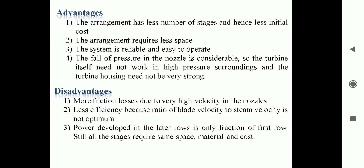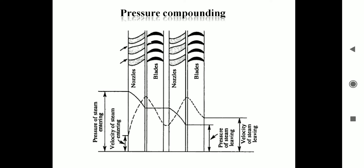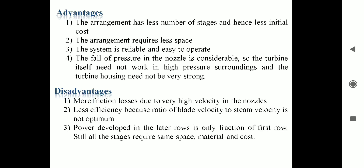The disadvantages are: first, more friction losses due to very high velocity in the nozzle, which means efficiency is less — less efficiency because the blade velocity is not optimum. The power developed is only a fraction and low pressure still has material cost. So here we conclude about the pressure compounding steam turbine. Our next lecture, we are going to discuss about the velocity compounding. Thanks for this lecture.